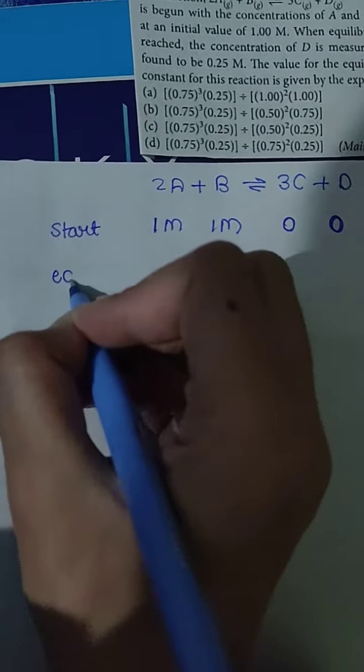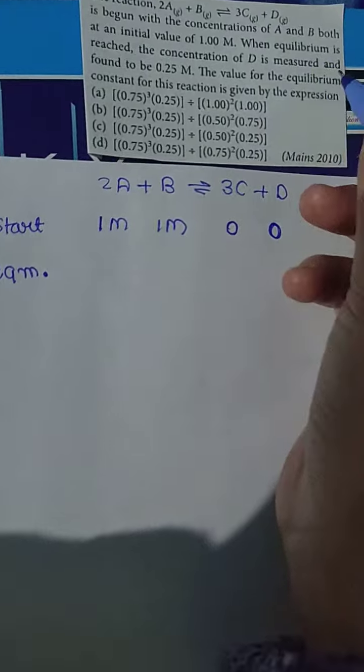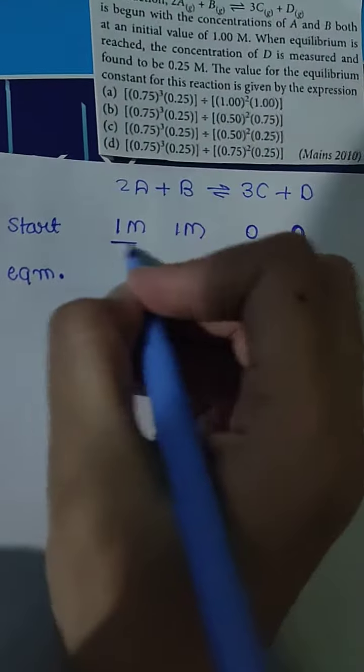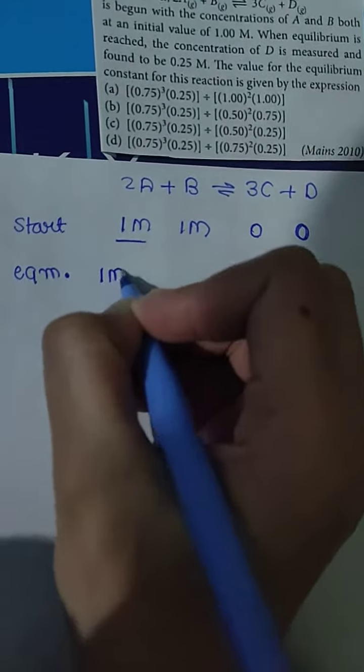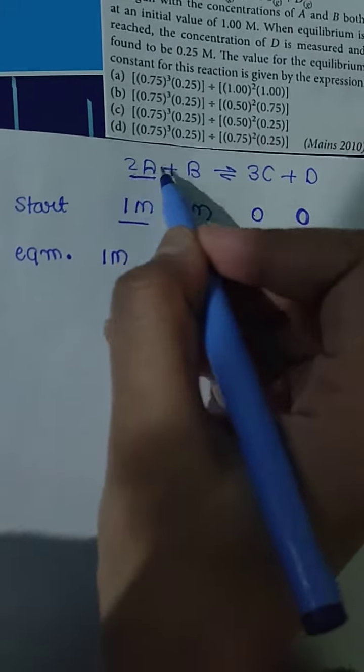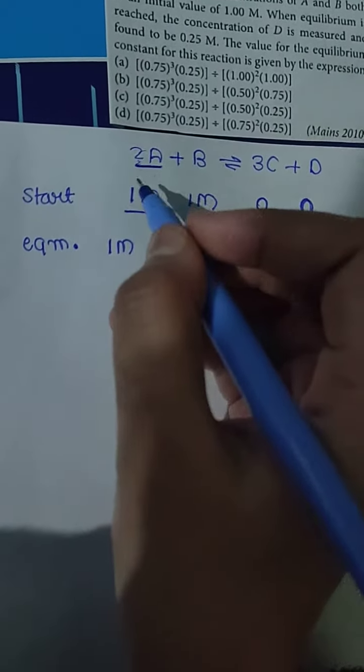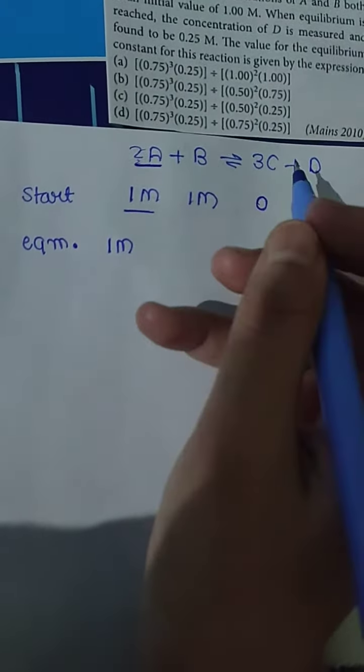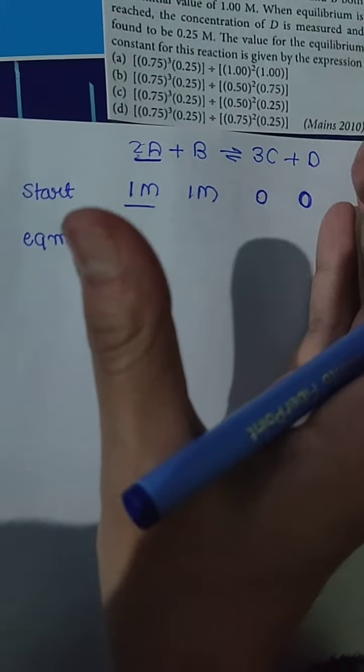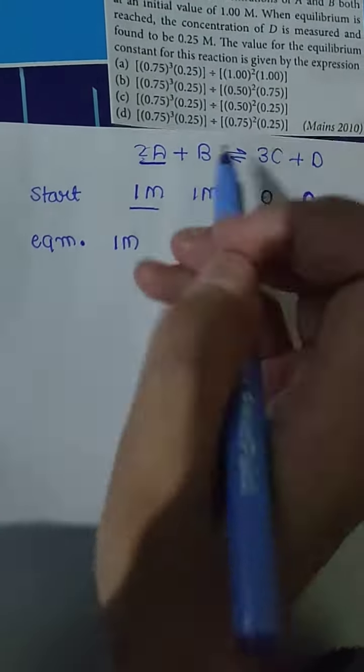When equilibrium is reached, the concentration of D is measured and found to be 0.25 molar. Since 1 mole of A requires 2 moles to react, let's take the degree of dissociation as x. So 1 mole dissociates by x, and 2 moles will dissociate by 2x.